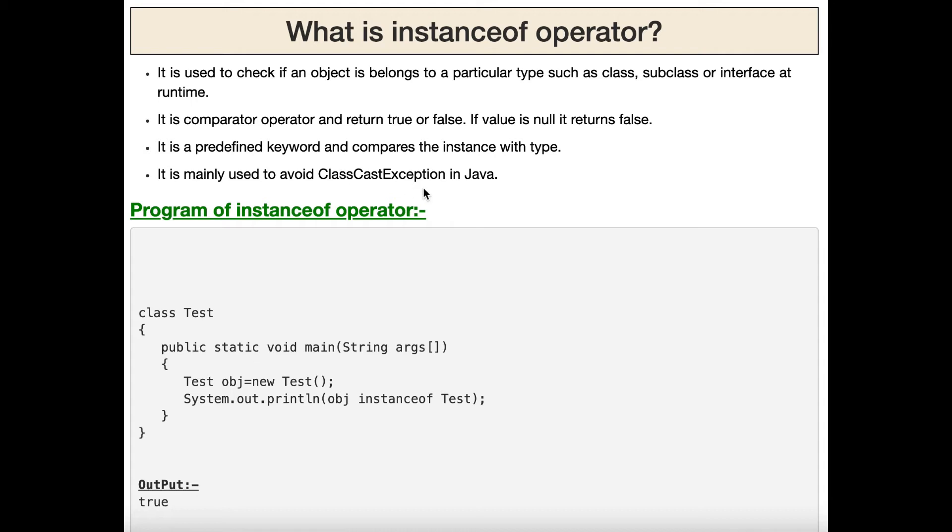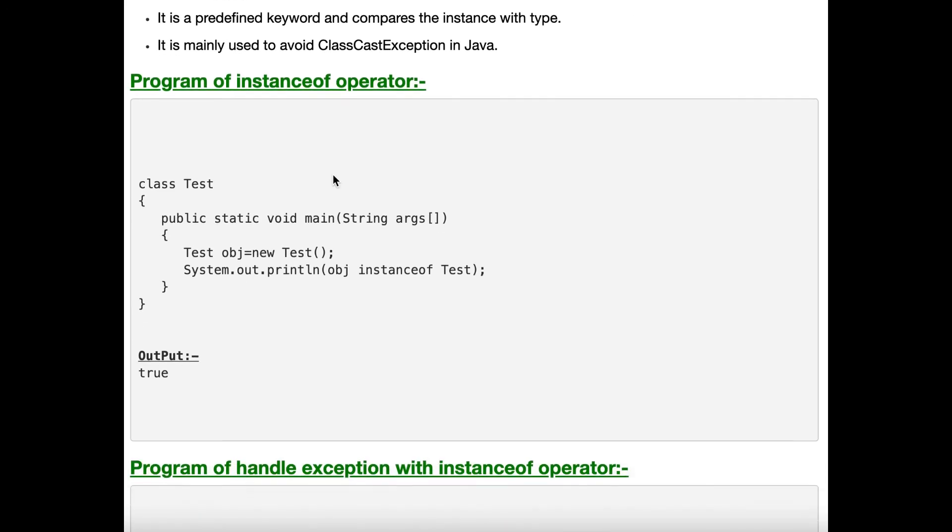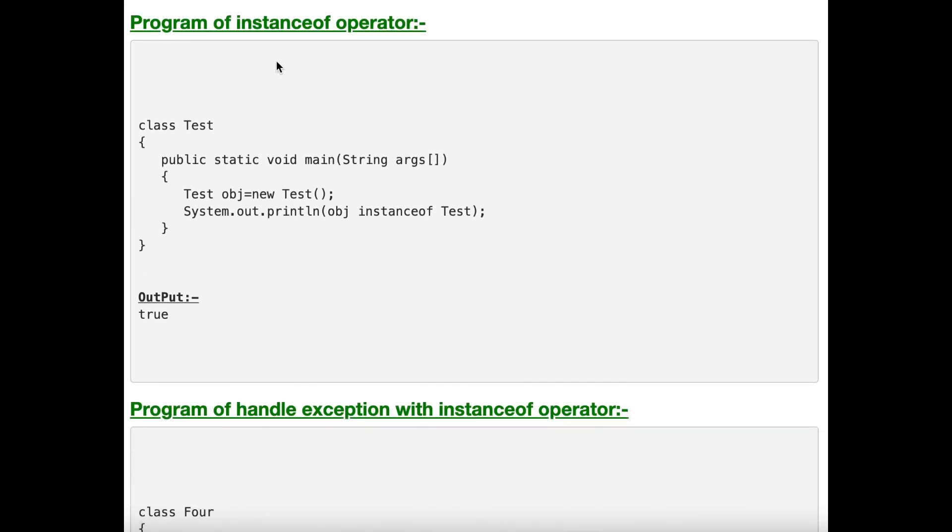Now the program of instanceof operator. We have to create a class, then we have to create a public static void main. Then we have to write one object obj and obj instanceof Test. We are going to write in a console message, system.out.println, inside that we have taken object obj instanceof Test.